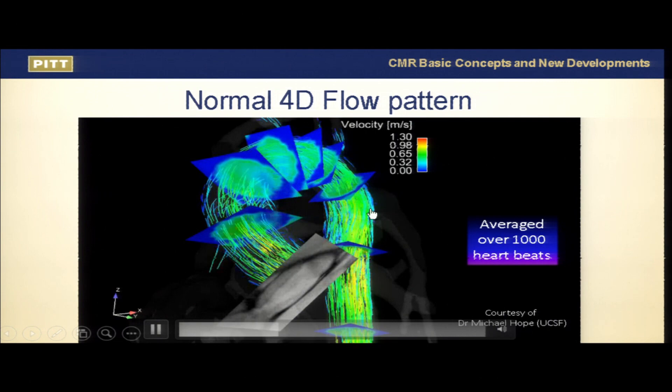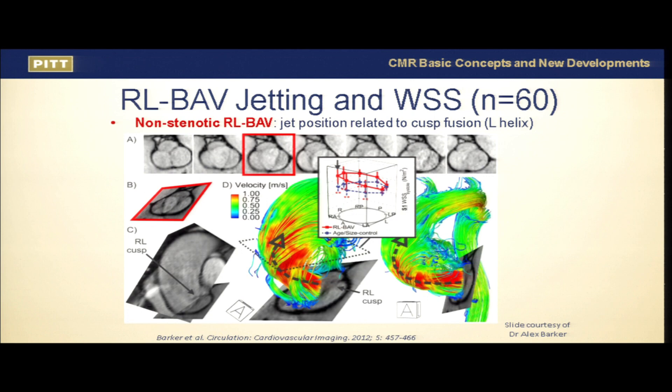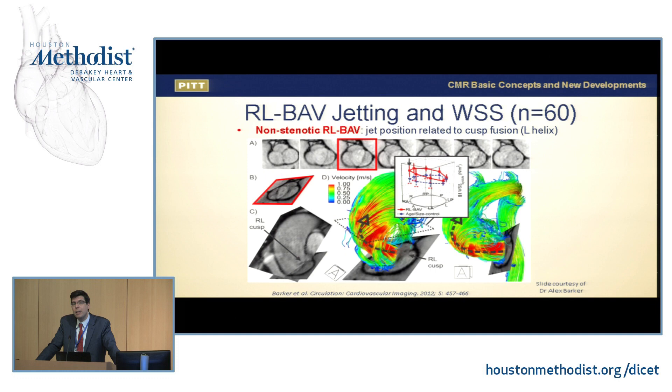Why could this be important? There is a lot of interest from the group at Northwestern — Alex Barker and Mike Markl, pioneers with a close relationship with Siemens — in understanding whether patients with bicuspid aortic valves show a flow pattern and increased wall shear stress that could contribute to the development of aortopathy.